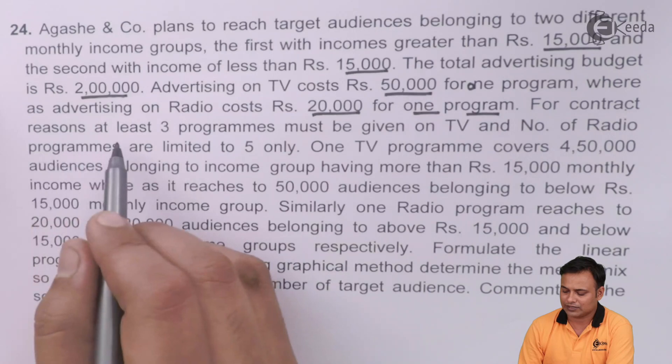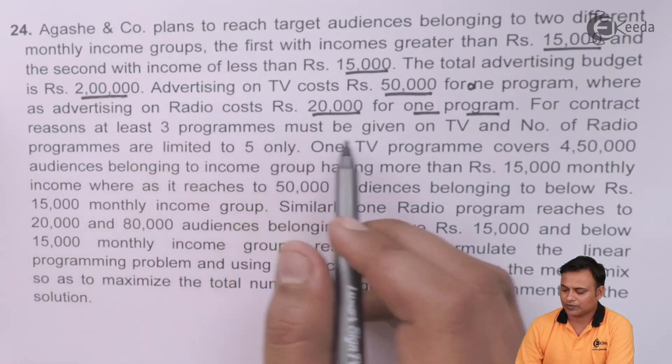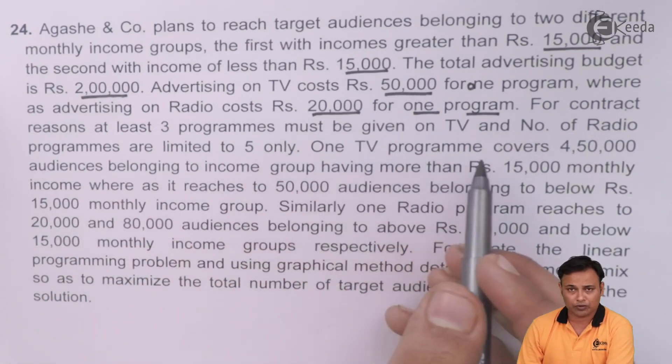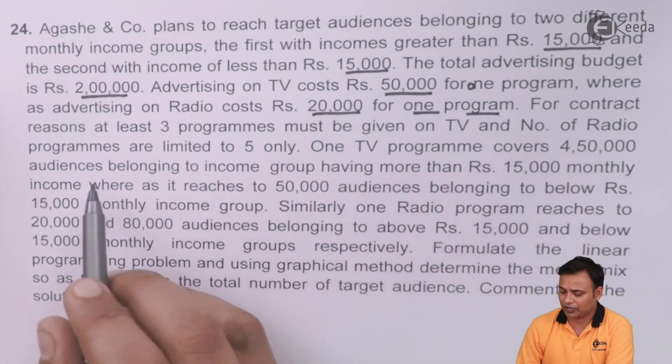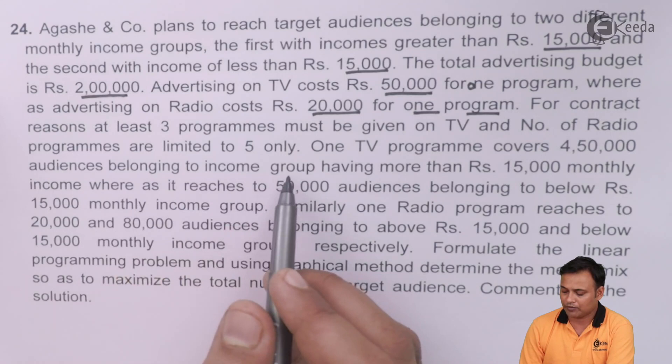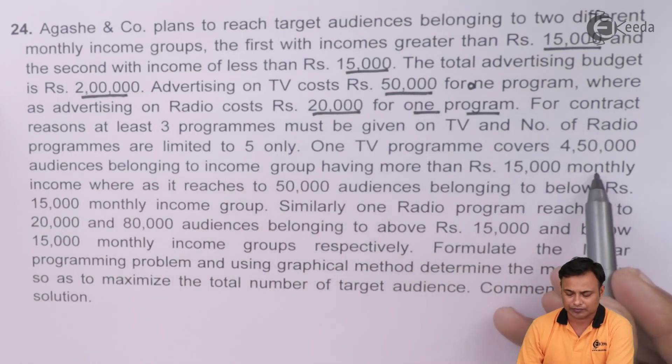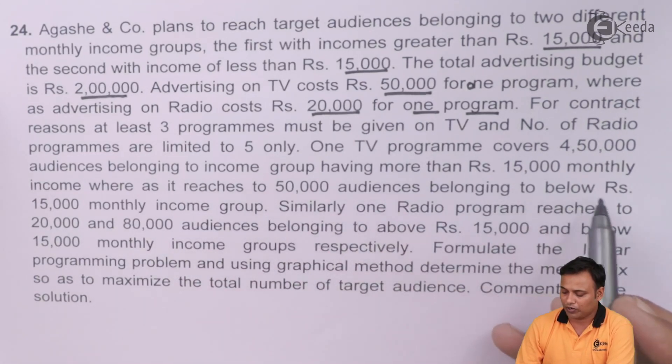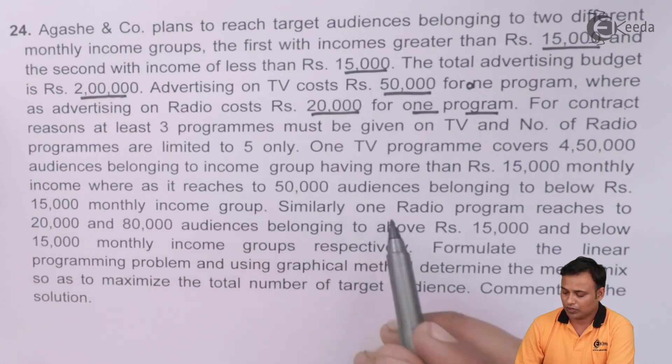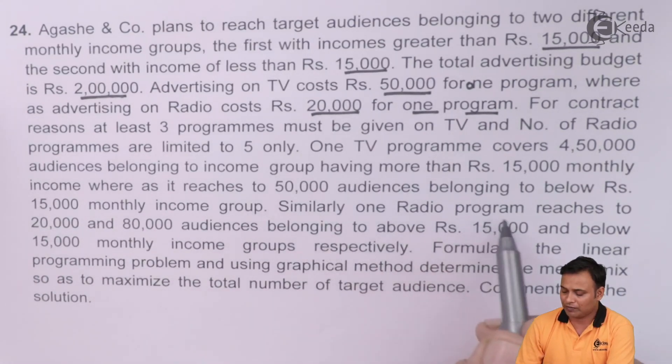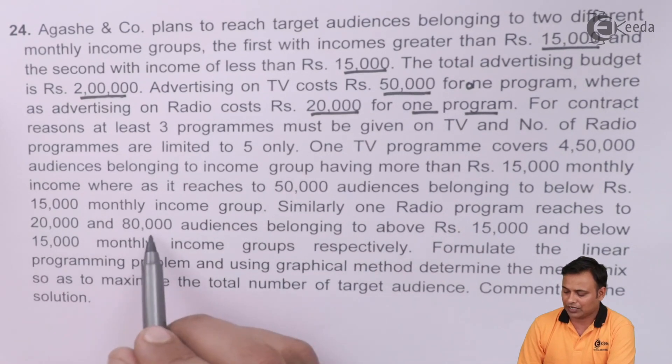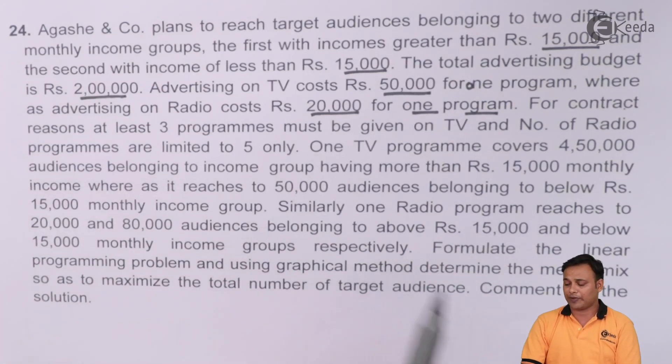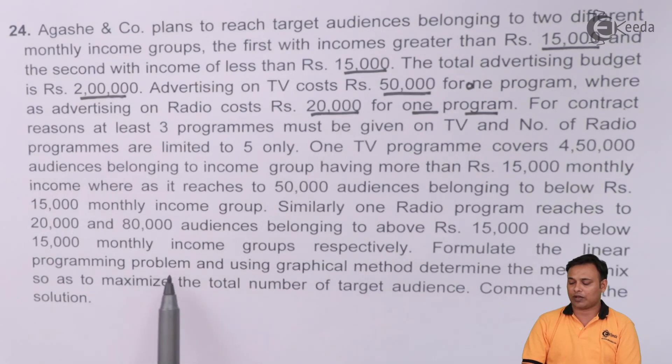For contract reasons, at least 3 programs must be given on TV and number of radio programs are limited to 5 only. One TV program covers 4,50,000 audience belonging to income group having more than 15,000 monthly income. Whereas it reaches 50,000 audience belonging to below Rs. 15,000 monthly income group. Similarly, one radio program reaches 20,000 and 80,000 audiences belonging to above 15,000 and below 15,000 monthly income groups respectively. Formulate the linear programming problem.